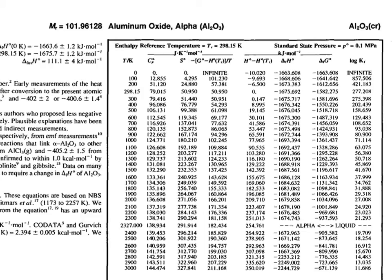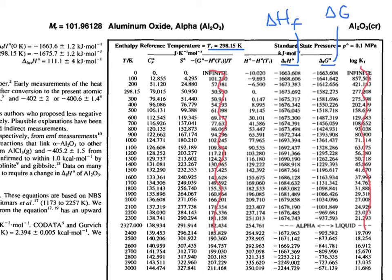Looking more closely at the Al₂O₃ table, we again have the enthalpy reference temperature of 298 K. The columns are: temperature, heat capacity, absolute entropy — with units given at the top. One column we are not concerned with, followed by the enthalpy of formation delta HF, and the Gibbs free energy of formation delta GF. There is no separate column for entropy of formation, but as long as we have delta HF and delta GF, we can calculate the entropy of formation at any temperature. The absolute entropies are also provided for use with reactions. The last column is enthalpy relative to the enthalpy at the reference temperature.